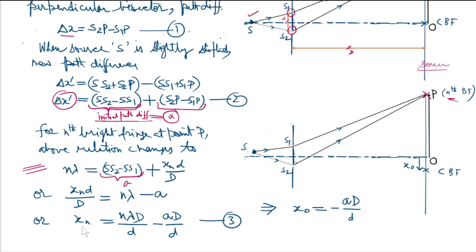This could be rewritten as xₙ equals nλD by d minus aD by d. Let's substitute n equals 0. For this case, this relation will change to x₀ equals minus aD by d. This clearly suggests that the central bright fringe has shifted downwards. Now as the central bright fringe has shifted downwards, in fact the whole fringe pattern has shifted downwards.